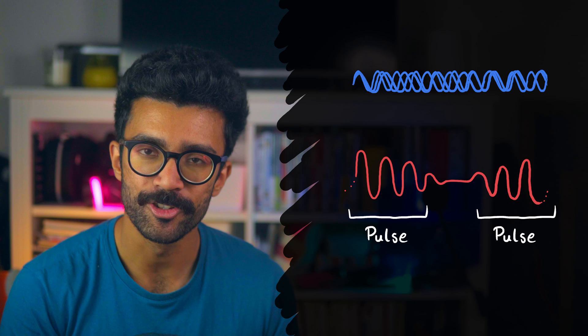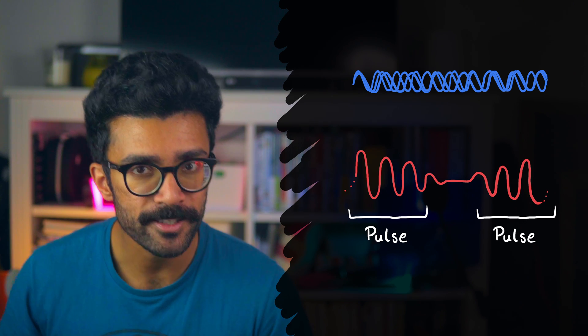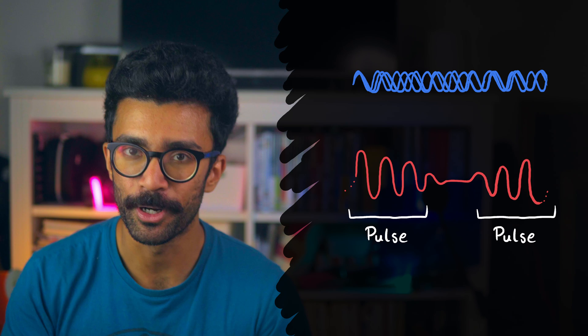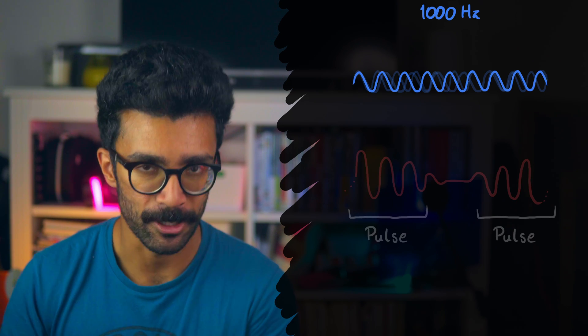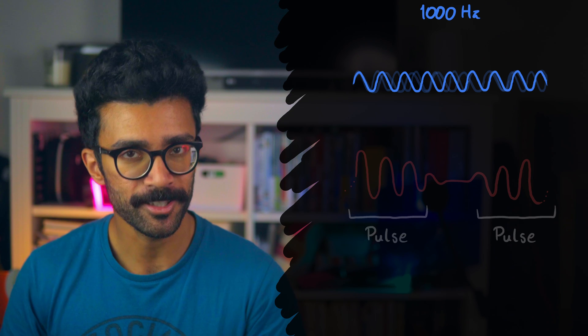Remember, frequency is just a measure of how many complete cycles of each wave there are passing a point per second. So, this wave, let's say, has a frequency of 1000 Hz. That's 1000 cycles per second.